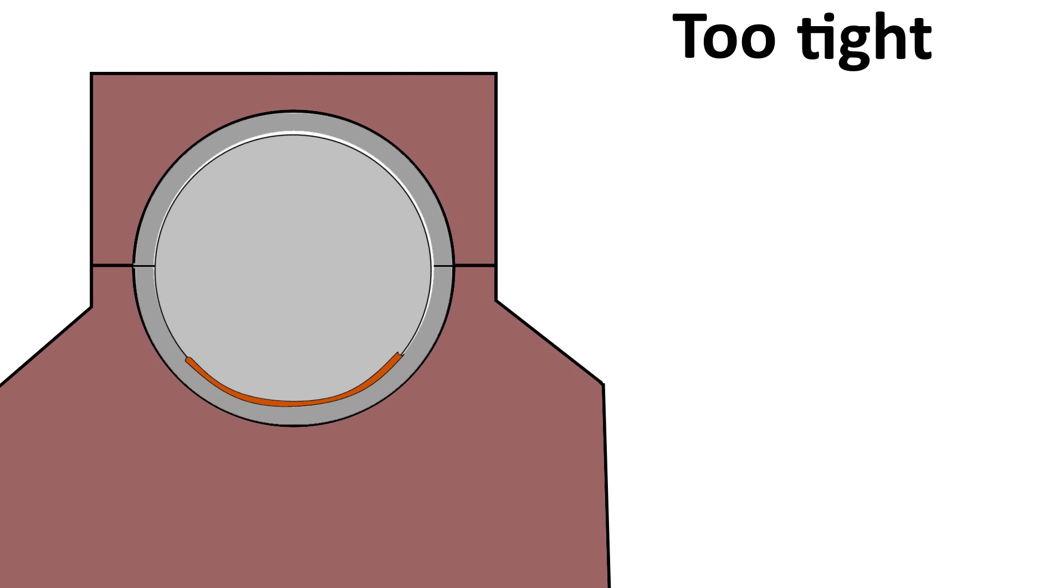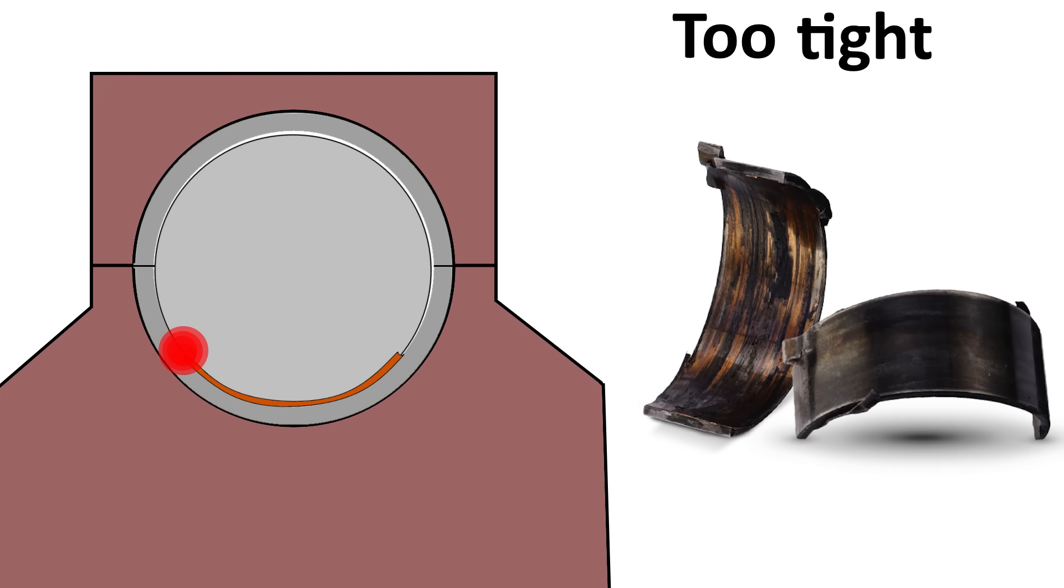If the clearance is too tight, metal to metal contact can occur under loads and during crankshaft flexing, and in most cases this will result in damage and engine failure.